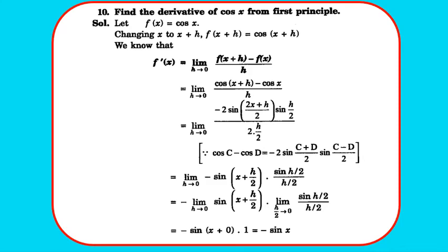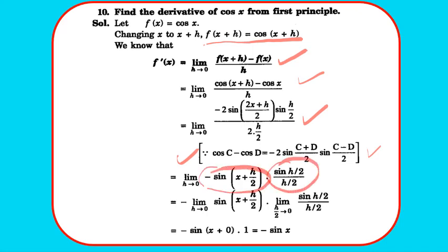Question 10: find the derivative of cos x from first principle. f(x+h) = cos(x+h). Applying first principle: limit h→0 of [cos(x+h) - cos x] / h. Using the identity cos C - cos D = -2 sin((C+D)/2) · sin((C-D)/2), we get limit h→0 of [-2 sin(x + h/2) · sin(h/2)] / h. Rearranging: -sin(x + h/2) × [sin(h/2)/(h/2)]. As h→0, sin(h/2)/(h/2) → 1, giving -sin x. So the differentiation of cos x is -sin x.